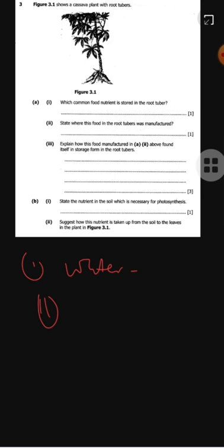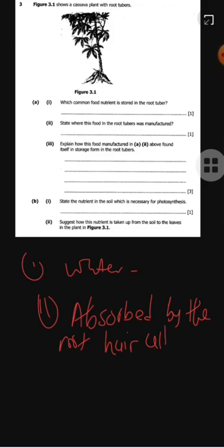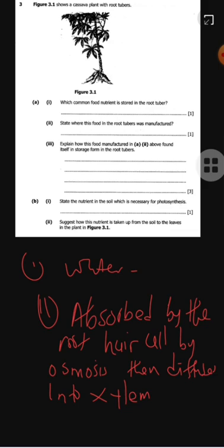Suggest how this nutrient is taken up from the soil to the leaves in the plant. Water is absorbed by the root hair cells by osmosis, then diffuses into the xylem and moved by transpiration pull to the leaves.